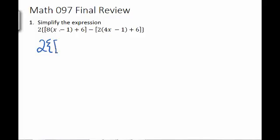I can't combine x minus 1, but I can multiply through by 8. That gives me 8x minus 8. And then I still have this plus 6. Then I can deal with the next parentheses.